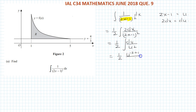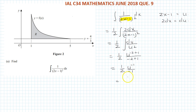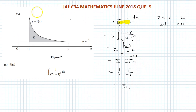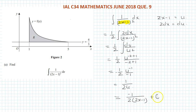So we have one half times u to the power minus 2. Integrating: u^(minus 2 plus 1) over (minus 2 plus 1) gives one half times u to the power minus 1 over minus 1, which equals negative 1 over 2u. Substituting back, u equals 2x minus 1, and we add the constant of integration, plus C.